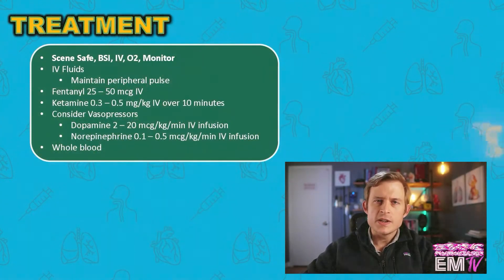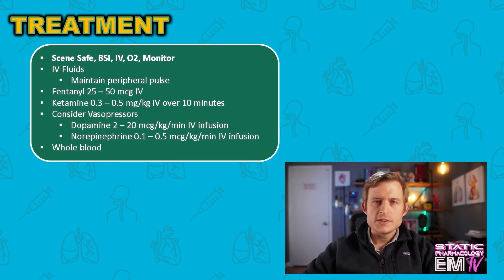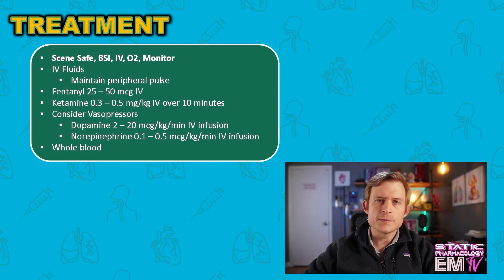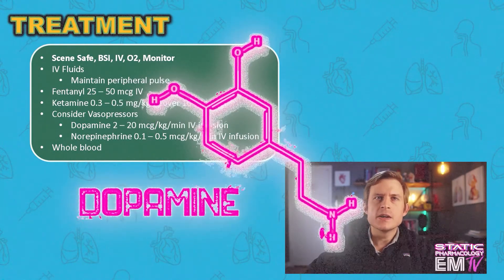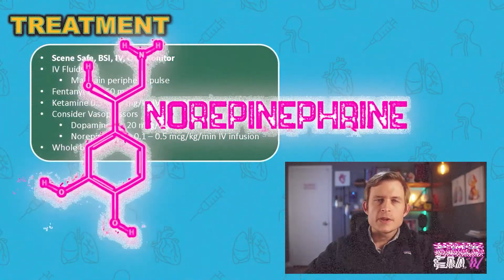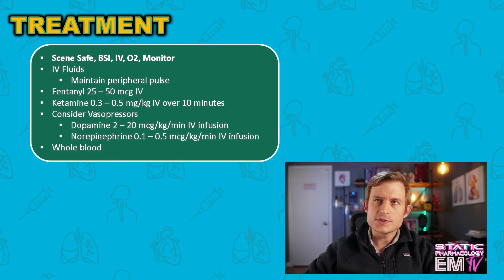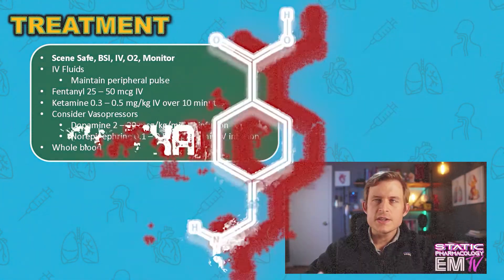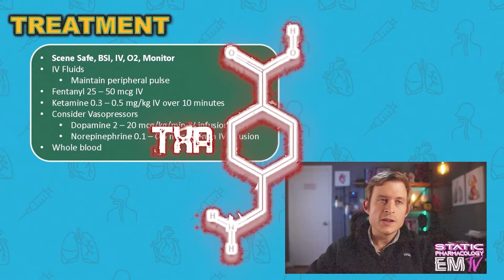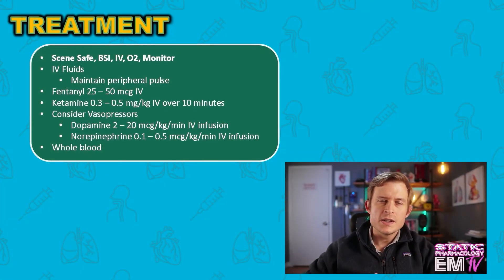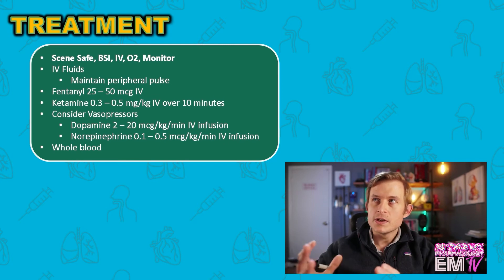Analgesic ketamine dosing is usually 0.3 to 0.5 milligrams per kilogram given slowly over about 10 minutes. To maintain adequate blood pressures after fluid resuscitation, we can consider vasopressors — dopamine or norepinephrine are excellent choices. Dopamine is dosed at 2 to 10 micrograms per kilogram per minute; norepinephrine at 0.1 to 0.5 micrograms per kilogram per minute, both as IV infusions titrated to effect. TXA is also something to consider, though it's generally reserved for external hemorrhage and there's limited data supporting its use here.